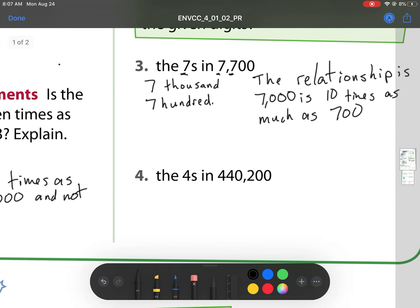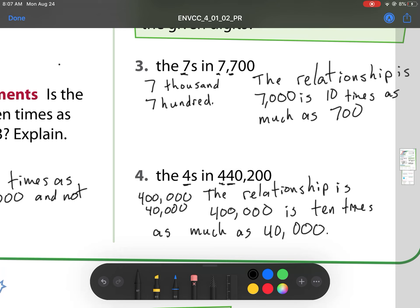And on to number four. So we have fours in 400,000 and 40,000. So what is that relationship? Again, we're going to rewrite the question. The relationship is 400,000 is ten times as much as 40,000. And how do I know that? Well, if I multiplied it by ten, I would get that answer.